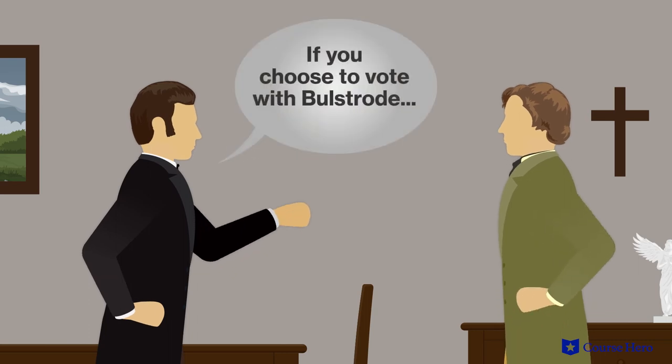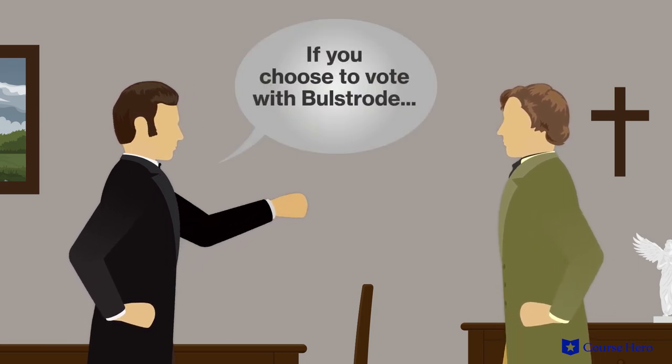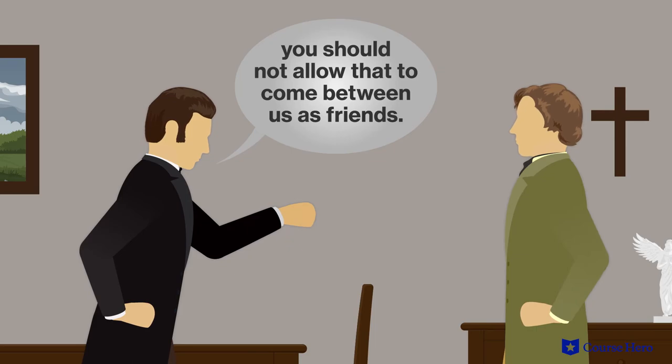Fairbrother tells him that if he chooses to vote with Bolstrode, the doctor should not allow that to come between them as friends.